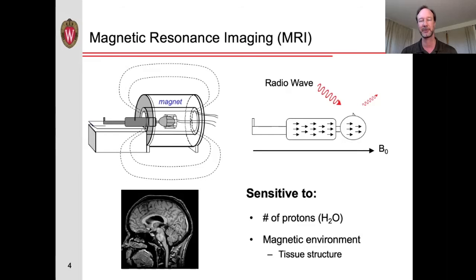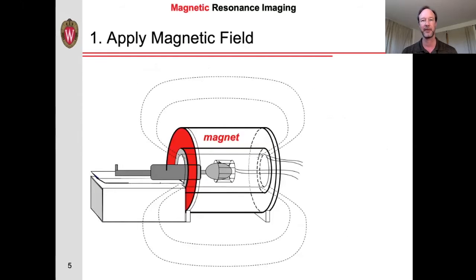Now let us look at these steps in greater detail. There are three basic components to MRI which can be understood by the three words: magnetic, resonance, and imaging. First, we place the person to be scanned into a large magnet.